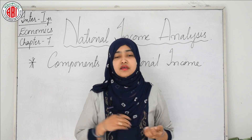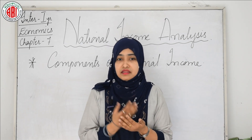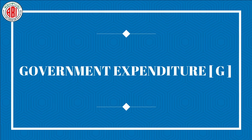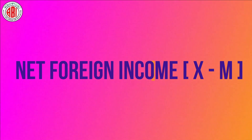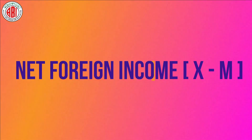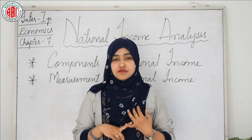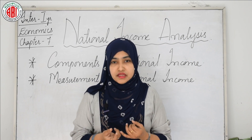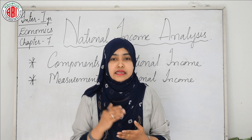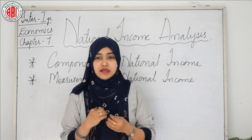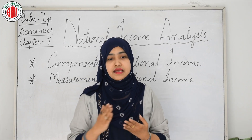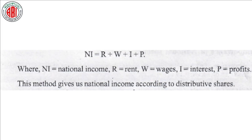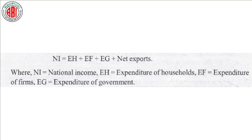The four main components of national income are: consumption, denoted by C; investment, denoted by I; government expenditure, denoted by G; and net foreign income, shown as X minus M. There are three methods of measuring national income: output method or product method, income method, and expenditure method, each with their respective calculations.